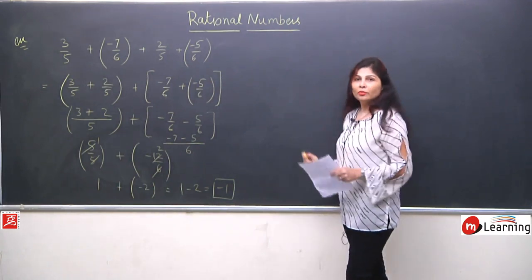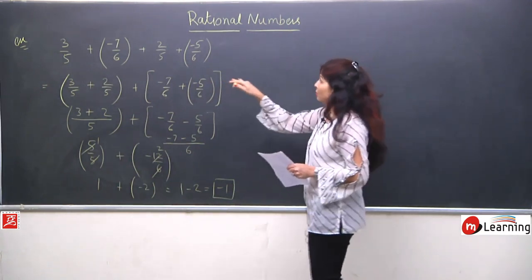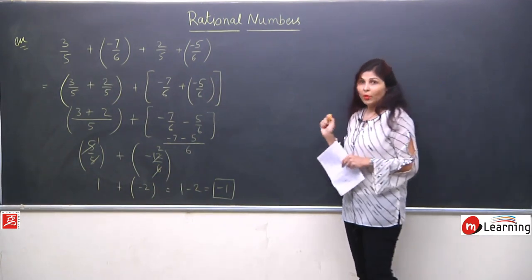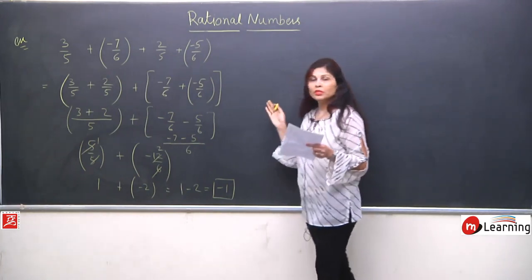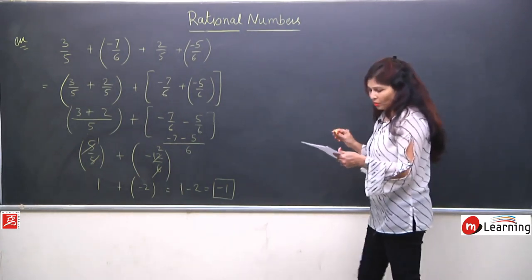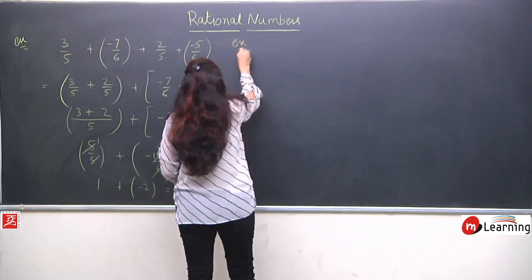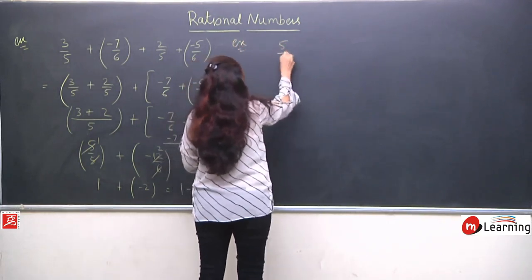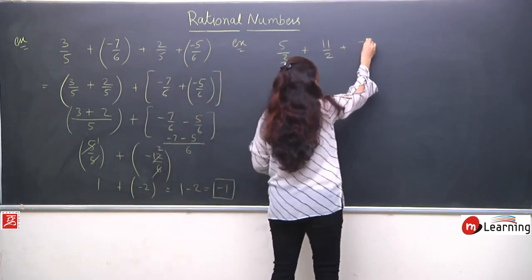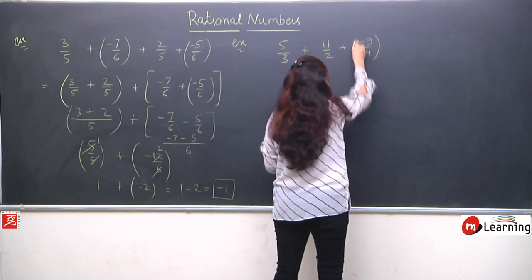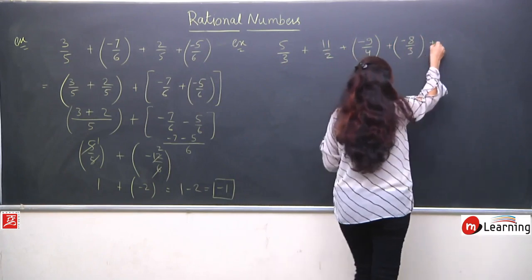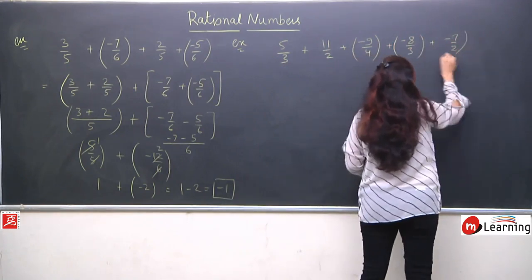So you can see how easy it became when we collected like denominators together. If we had taken the full LCM of everything together, it might have been more difficult. Our effort should always be to take like denominators to one side to make it easier to solve. Now the second example: 5/3 + 11/2 + (-9/4) + (-8/3) + (-7/2).